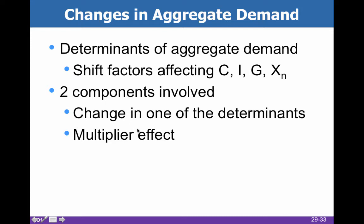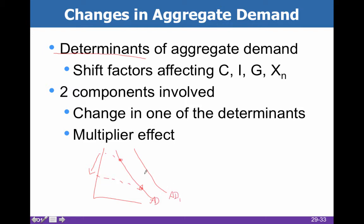If we're going to move aggregate demand, then we're going to deal with the determinants. In the previous slide, a change in price level gives you movement along the existing aggregate demand. Now we're talking about a shift in aggregate demand from AD to AD1 — that whole shift. There are two components: one is the change in the determinants, and the other is the multiplier effect.